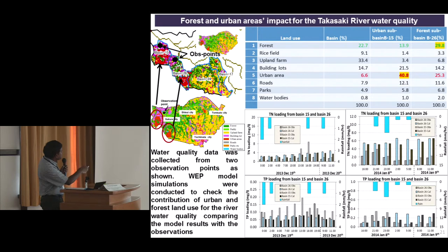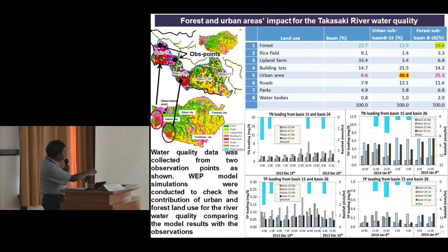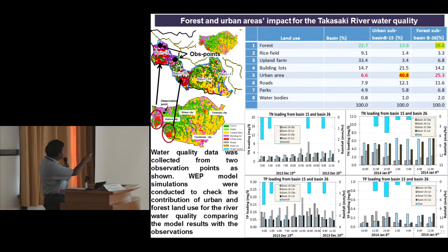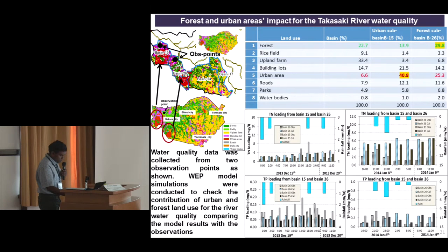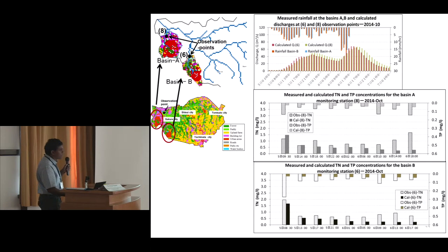To study each land use type, we selected small sub-basins — one predominantly urban and one predominantly forested. The results for each sub-basin were not as good as for the main basin, requiring localized parameter tuning, which is complicated and currently ongoing. A further set of results for the same location is also presented.